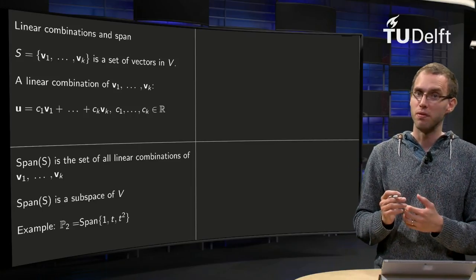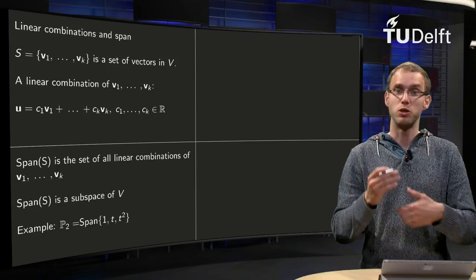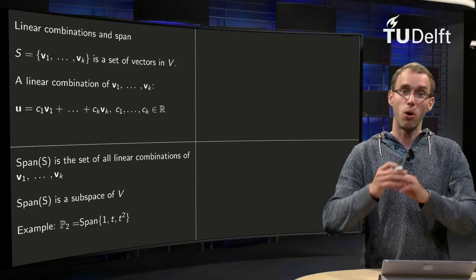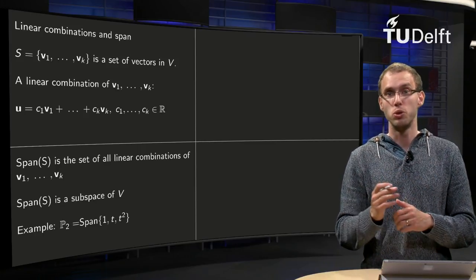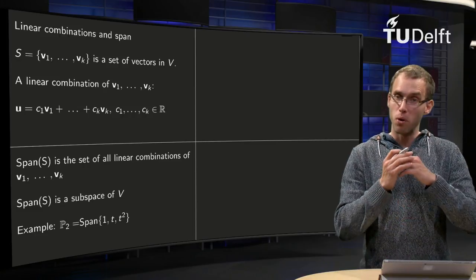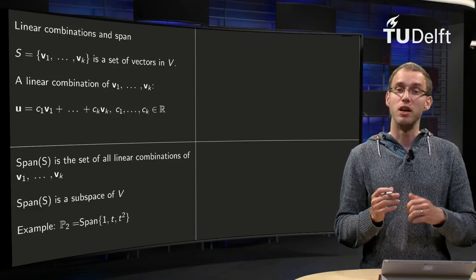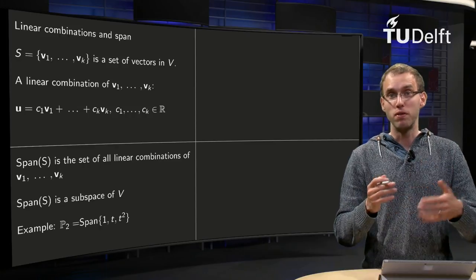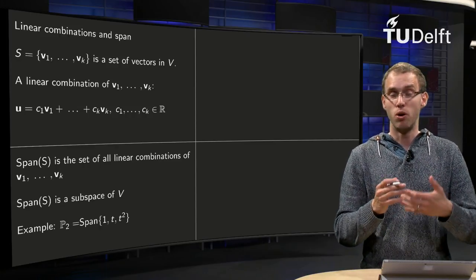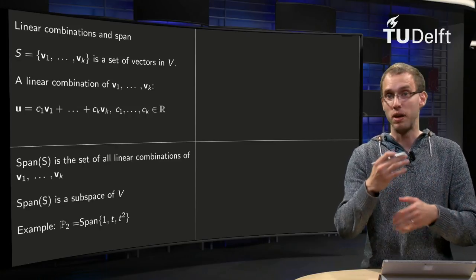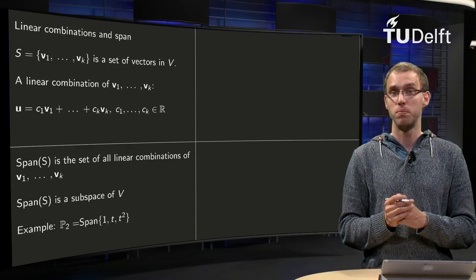For example, if we take a set of vectors 1, t, and t squared, and take all linear combinations of 1, t, and t squared, we can form all second-order polynomials. So that means the span of 1, t, and t squared is the whole P2. You can make all polynomials in P2.